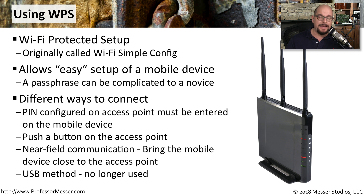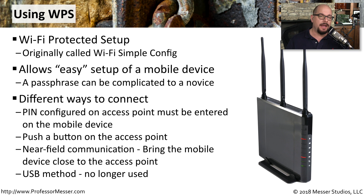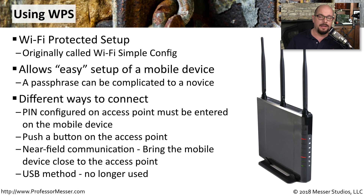One method uses an eight-digit PIN configured on the access point, which you simply enter on your mobile device. Another form of WPS authentication used a button you would push on the front of the access point, and other access points supported near field communication, or NFC. Older types of WPS authentication allowed you to plug a USB key into the wireless access point, but that method is no longer used today.